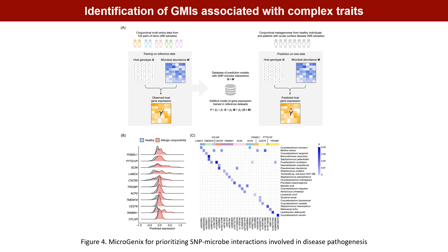We illustrated the application of Microgenics by identifying GMIs that may play a role in allergic conjunctivitis. We identified 11 genes positively associated with allergic conjunctivitis, 5 of which are located in genetic regions previously associated with allergy.